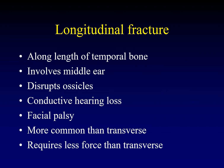Longitudinal fractures run along the length of the temporal bone, along the axis of the petrous apex. They tend to run through the middle ear cavity because that's the path of least resistance — going through that open air of the middle ear. They often disrupt the ossicles, so ossicular dislocations occur in longitudinal fractures. Because of this, they tend to result in conductive hearing loss. But if the fracture line runs anteriorly to involve the geniculate ganglion, you can also get facial palsy.